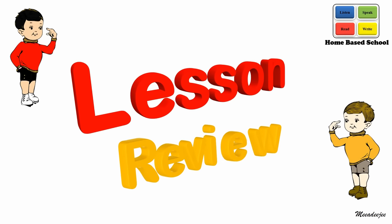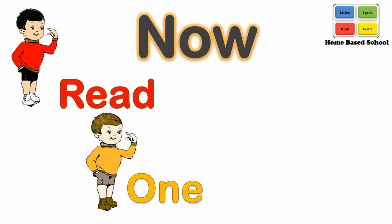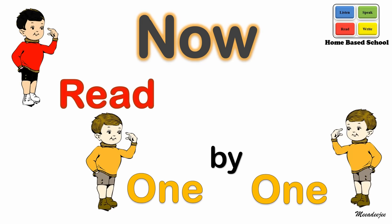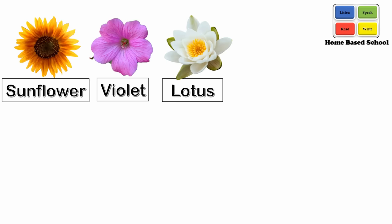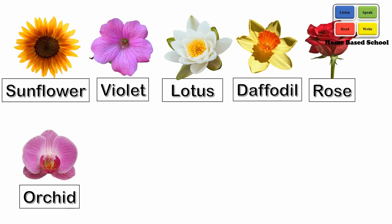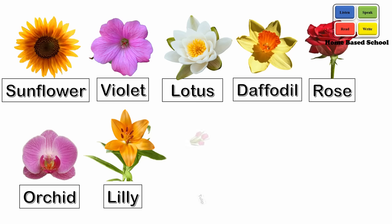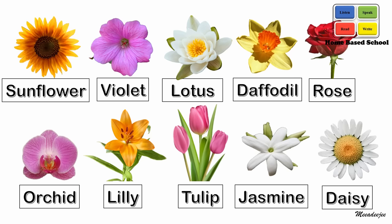Lesson Review. Now read one by one. Sunflower, violet flower, lotus flower, daffodil flower, rose flower, orchid flower, lily flower, tulip flower, jasmine flower.